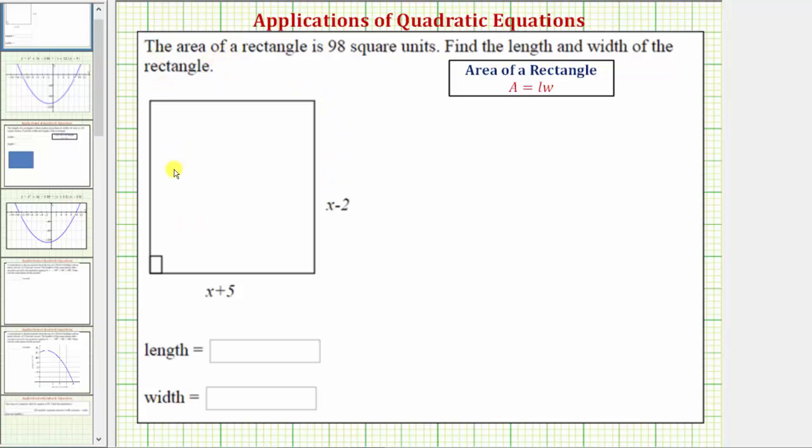So this is our rectangle, and we know the area is 98 square units, and the length is x plus five, and the width is x minus two. Remember the length is always the longer side, and the width is always the shorter side.